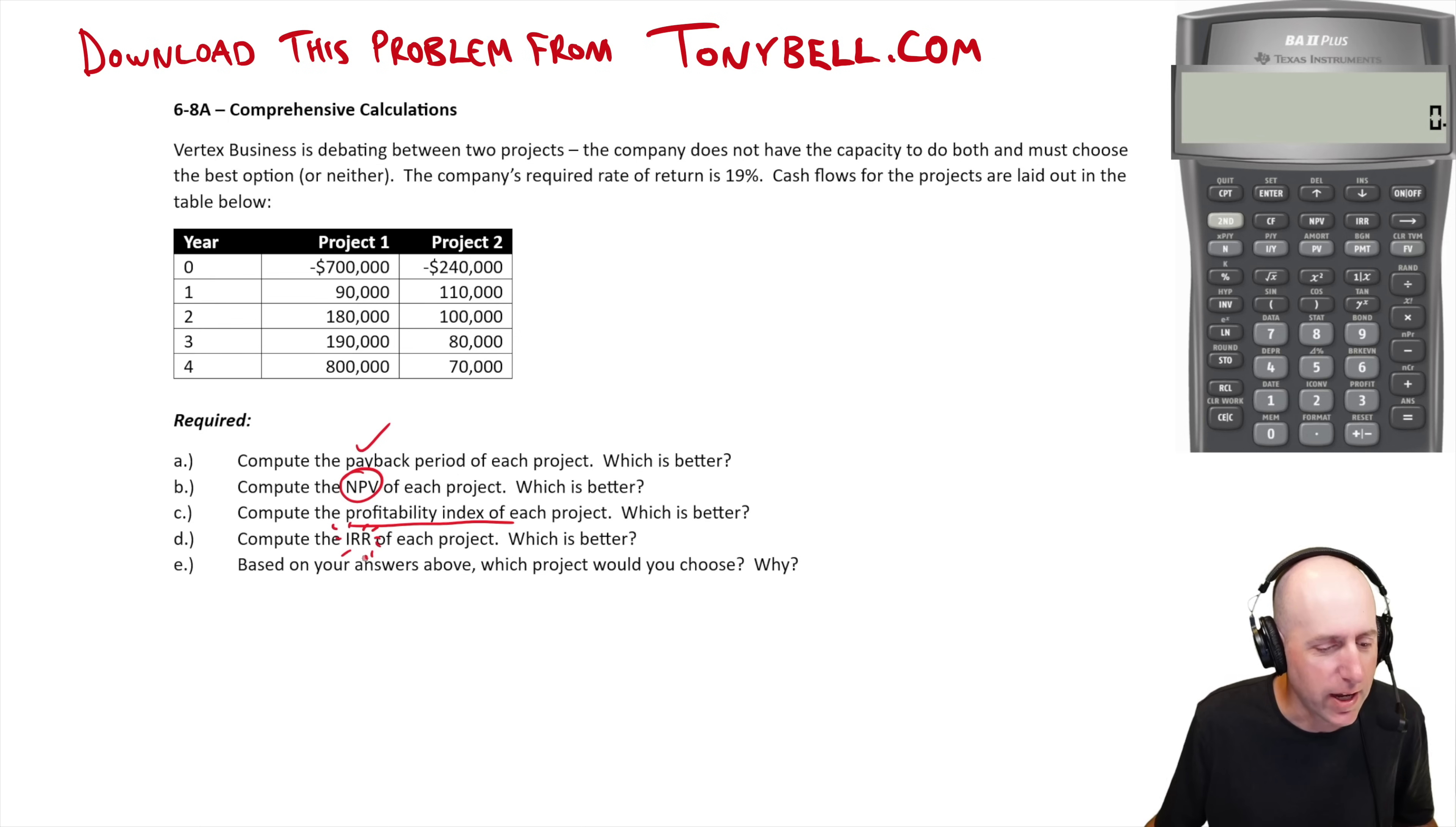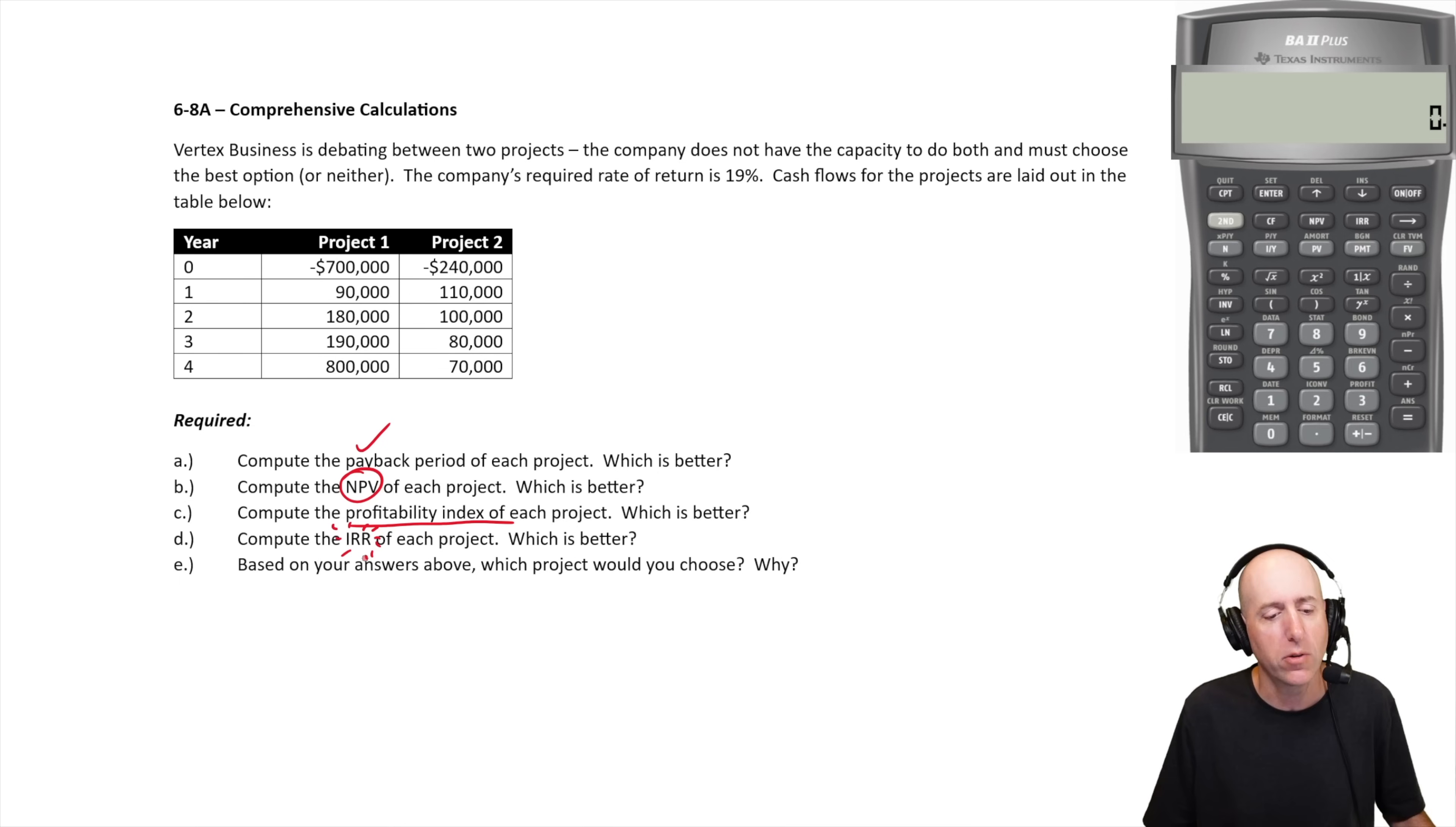So the question says Vertex Business is debating between two projects. The company does not have the capacity to do both and must choose the best option or neither. The company's required rate of return is 19%. Cash flows for the projects are laid out in the table below. And the first thing we're asked to do is to compute the payback period, which is the simplest, I consider this back of the napkin calculation, where we just go, how many years does it take for this project to pay off?